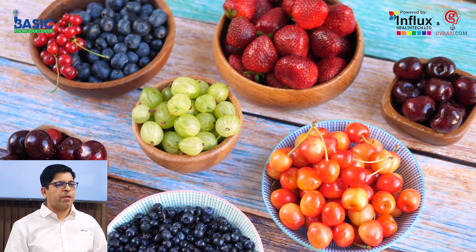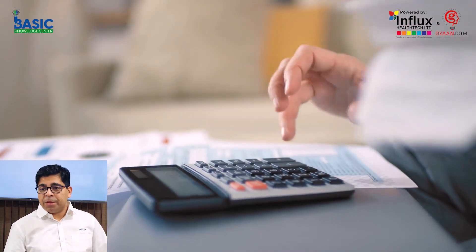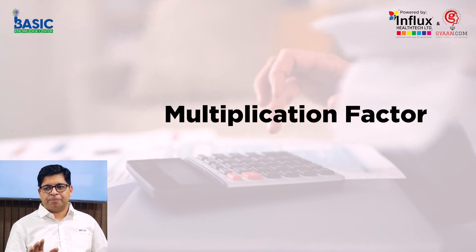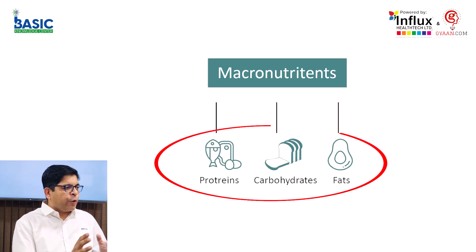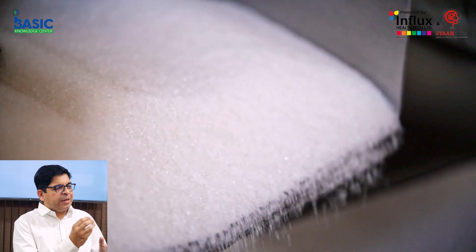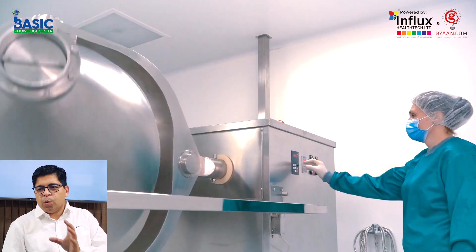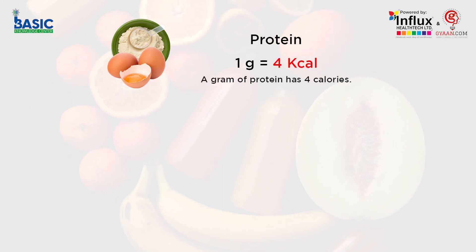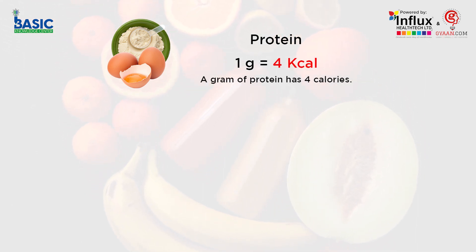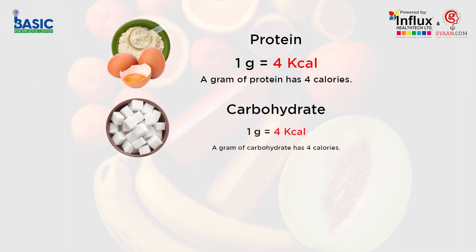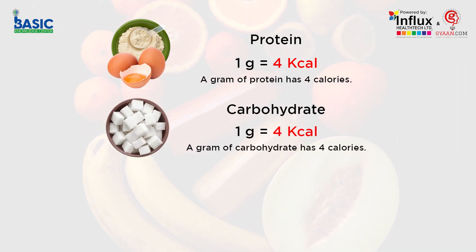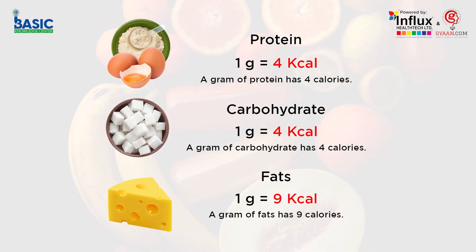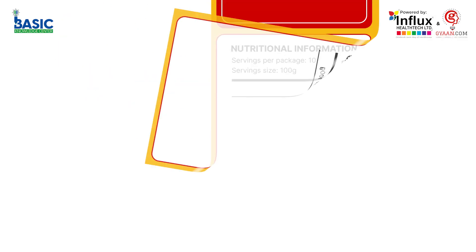To get the energy value from macronutrients, there is a multiplication factor — each macronutrient has a factor and we multiply it by the quantity of that ingredient in the product. Protein: 1 gram gives you 4 calories, so the multiplication factor is 4. Similarly, carbohydrate gives you 4 calories per gram, with a multiplication factor of 4. Fat gives you 9 calories per gram, with a multiplication factor of 9.